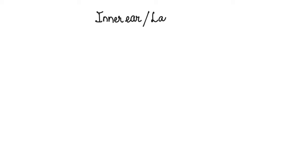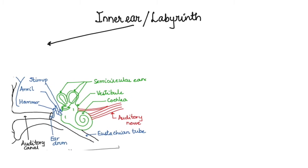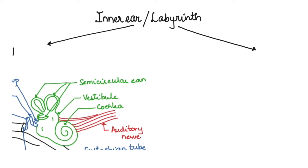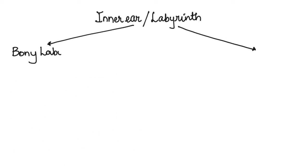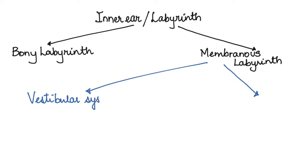The labyrinth, or the inner ear, is a part of the human ear. As seen in our previous video on the structure of the human ear, the green part in the diagram is the labyrinth or inner ear. It consists of two main divisions: a bony capsule on the outside called the bony labyrinth, and inside it a membranous, fluid-filled part called the membranous labyrinth.